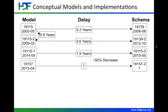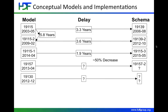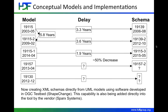This is important for things like data quality, where the standard is about a year old and we've already got a schema for that. 19130 is a standard that doesn't have any schema. The important thing is that we're now creating these schemas directly from the UML models, using software developed in an OGC Open Geospatial Consortium Testbed. This capability is also being added directly into the Enterprise Architect UML modeling tool by Sparx Systems.